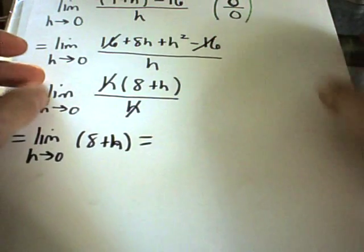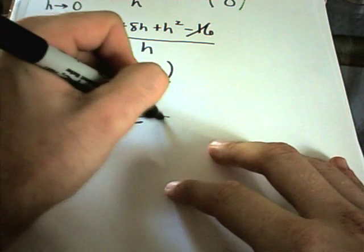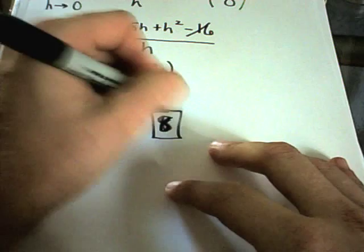We go back to our old trick of plugging and chugging. If you plug in h equals 0, we're left with 8, and that is our solution. Thank you.